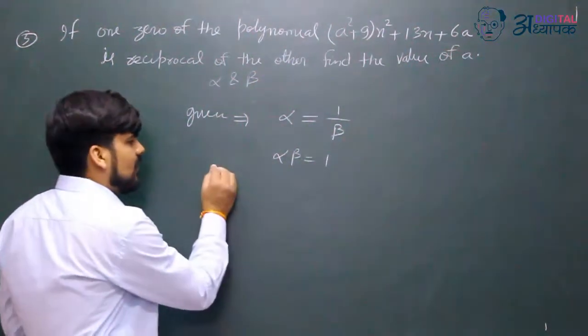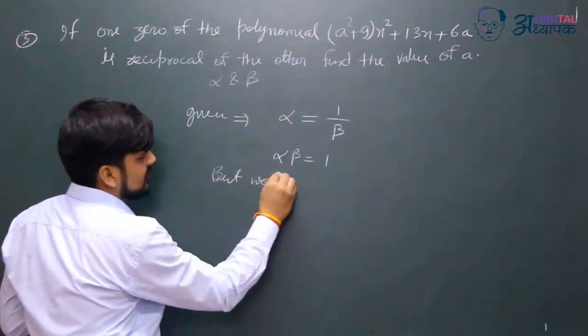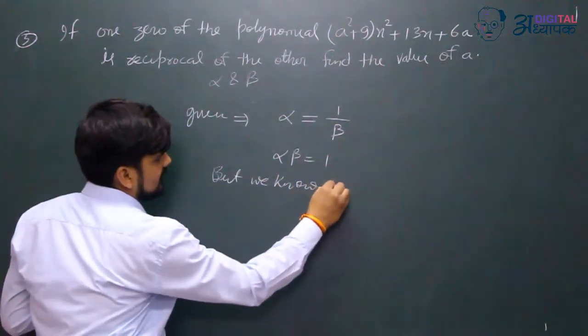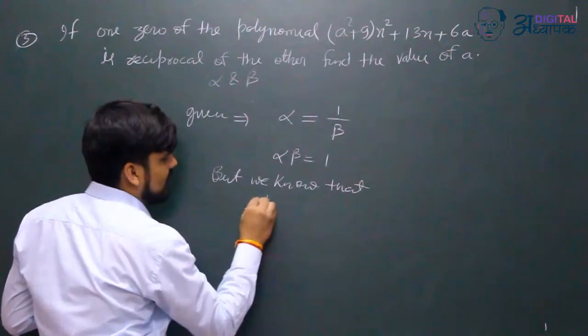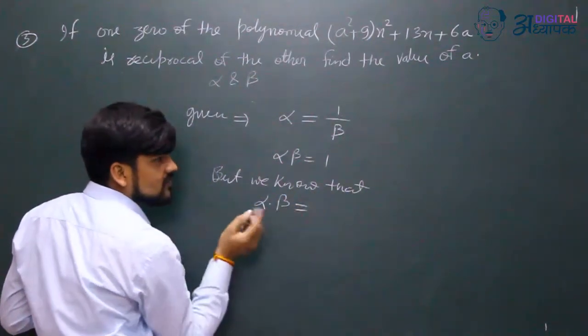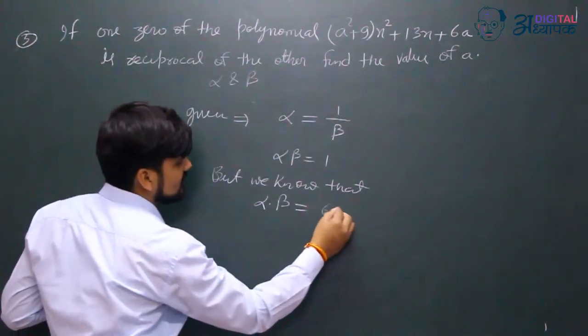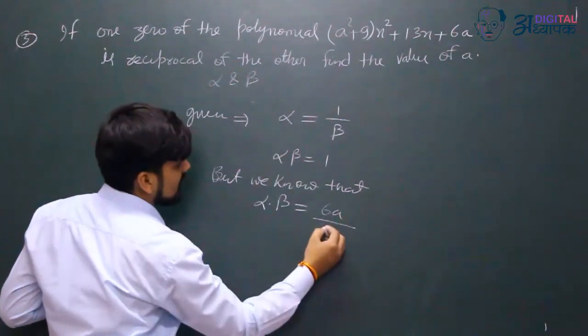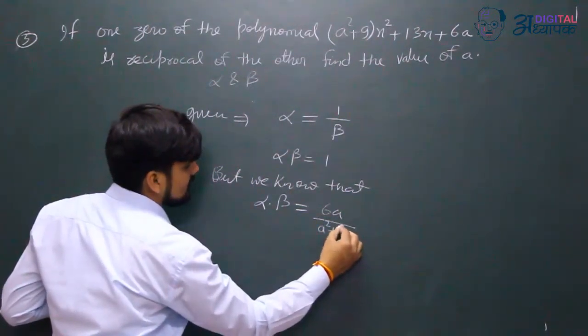We know that product of roots alpha into beta is c by a, which is 6a upon a²+9.